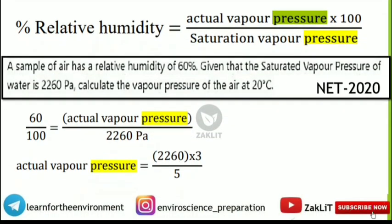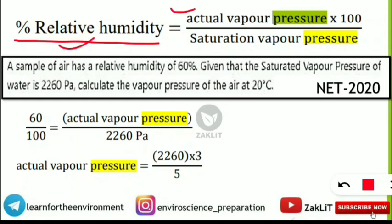Next, another important formula related to pressure is for percentage relative humidity. This type of question is very frequently asked. The formula is: Percentage Relative Humidity = (Actual Vapor Pressure × 100) / Saturation Vapor Pressure. All these formulas are related to pressure, which is why we are covering them here in this continuation of the syllabus preparation.